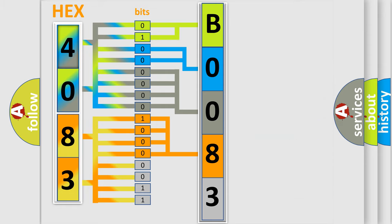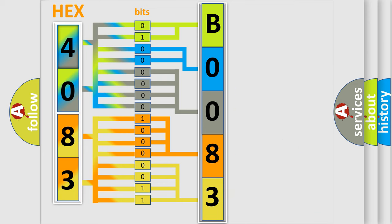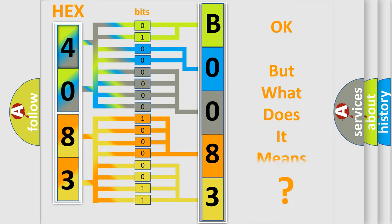A single byte conceals 256 possible combinations. We now know in what way the diagnostic tool translates the received information into a more comprehensible format. The number itself does not make sense to us if we cannot assign information about what it actually expresses.